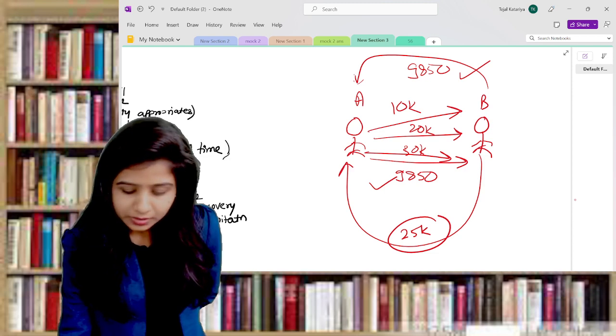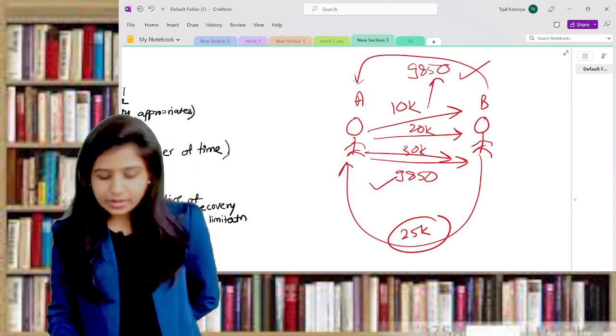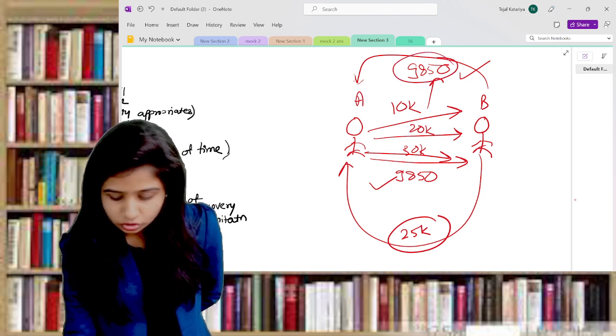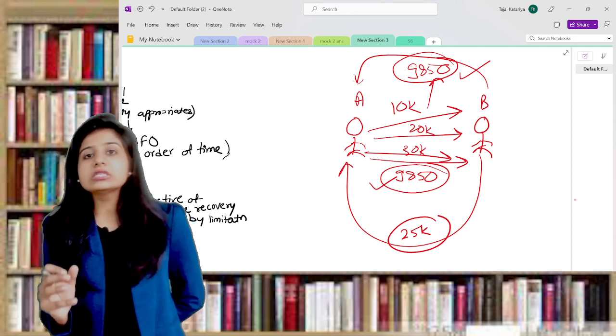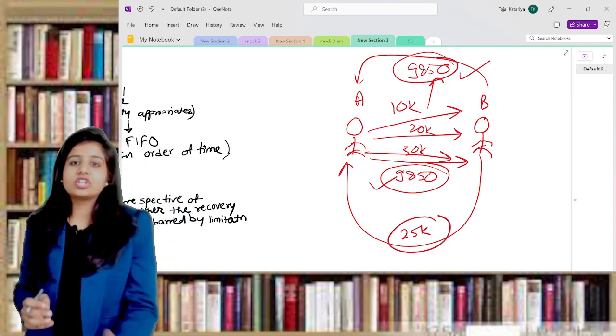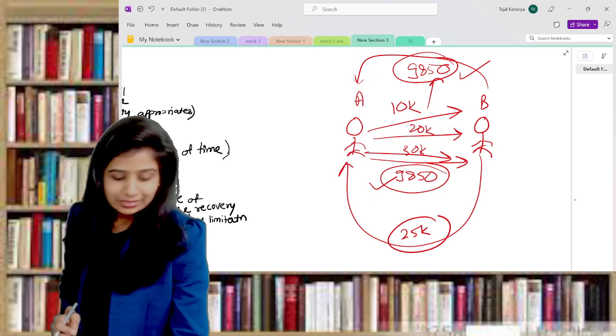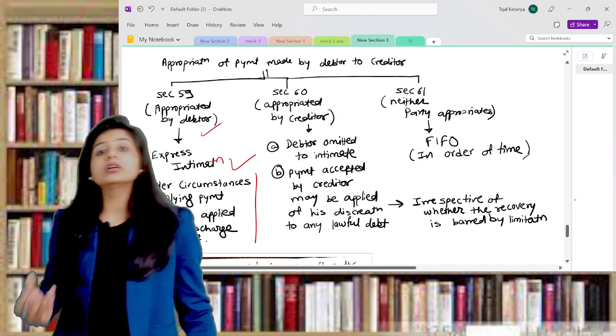Are you getting my point? So it should not be that against 10,000 you are applying this 9,850 check against the earlier loan. These are the circumstances which are implying that you should discharge against the debt.